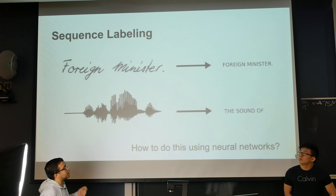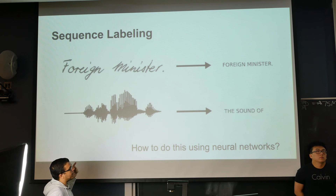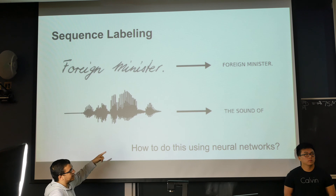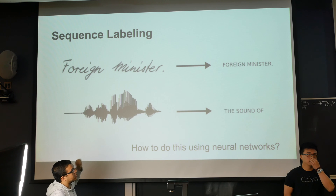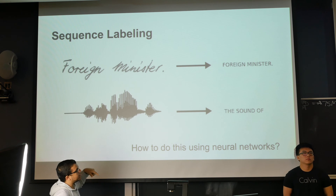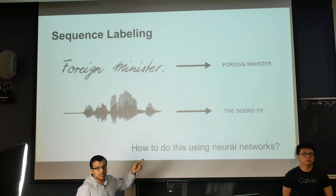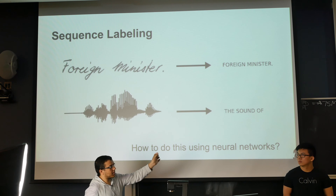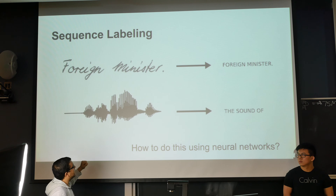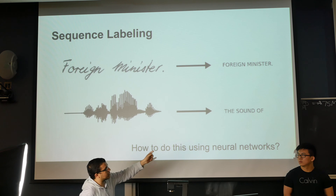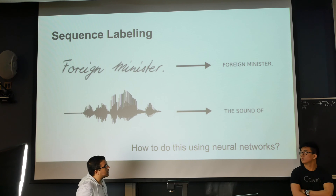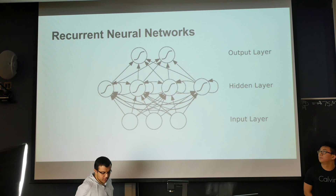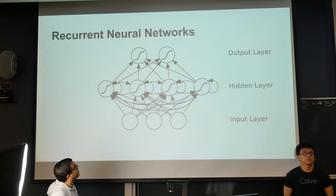In sequence labeling, the input is a sequence of features — it could be speech or handwriting recognition — and the output should be another sequence of a different length. For speech, the output could be like a stream of characters.